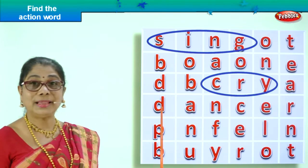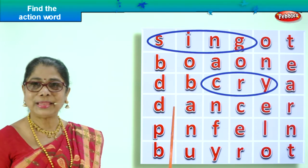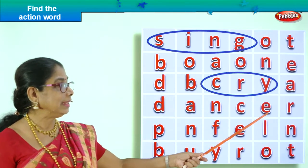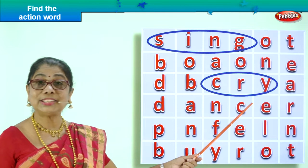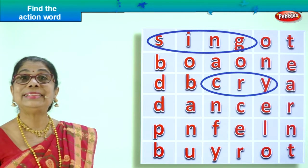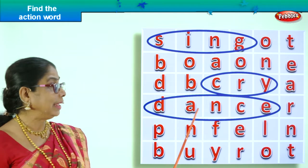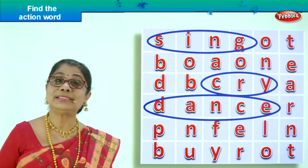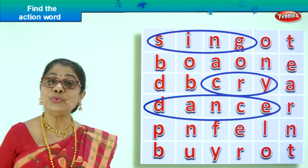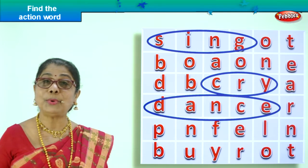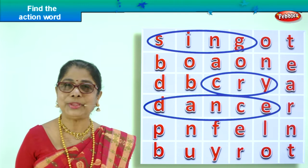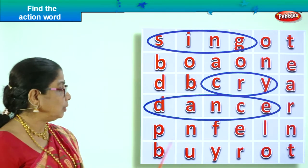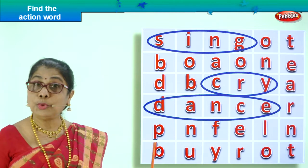Let's look at the next one. D-A-N-C-E-A — yes, there is an action word here. What is that? Dance. Very good. D-A-N-C-E, dance. What is dance? You move your hands and legs and your body when you are very happy. You go dancing when you are very happy. Good.